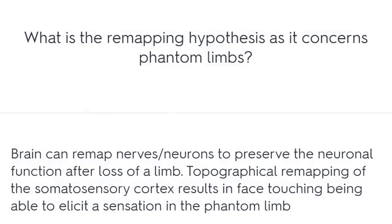What is the remapping hypothesis as it concerns phantom limbs? The brain can remap neurons to preserve neuronal function after the loss of a limb. Topographical remapping of the somatosensory cortex results in face touching being able to elicit a sensation in the phantom limb.